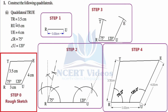First of all, we check the continuity or cyclicity of the given statements. TR is continuous, therefore it must be a side of this quadrilateral — 3.5 centimeter. RU is again continuous, measuring 3 centimeter — again a side. UE is again continuous, therefore it is a side as 4 centimeter. The in-between angles are ∠R = 75 degrees and ∠U = 120 degrees respectively.